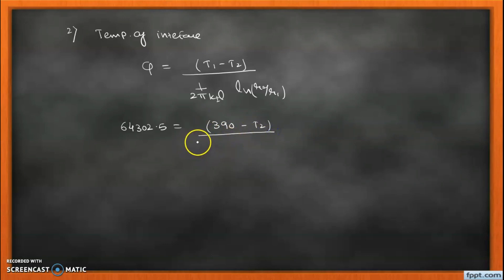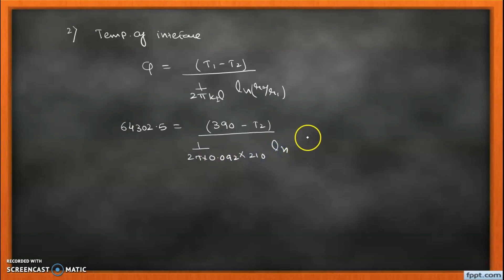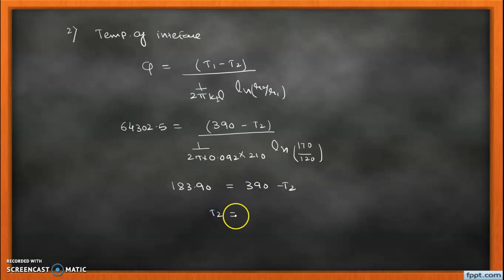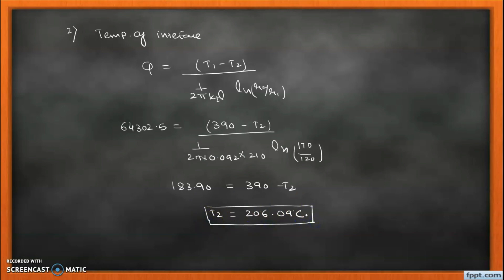Substituting the values and solving the equation gives 183.90 = 390 − T2, so finally T2 = 206.09°C. This is our second answer. In this way we are able to solve this numerical. Thank you for watching this video.